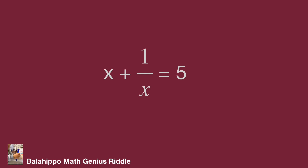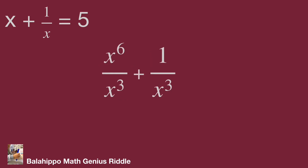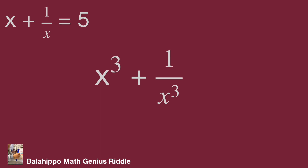That's a new piece of information — put x plus 1 over x equals 5 to the side. Then check the target expression x to the power 6 plus 1 over x cubed. Using the same thinking, develop it as x to the power 6 over x cubed plus 1 over x cubed, which equals x cubed plus 1 over x cubed. Now the question becomes more clear: just find the value from x plus 1 over x equals 5.